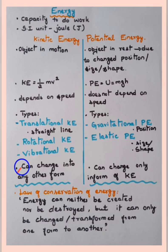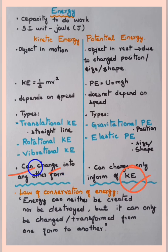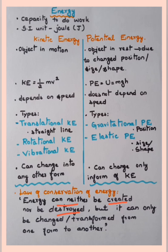Kinetic energy can be changed into any other form. Potential energy can only be changed into kinetic energy; it cannot be changed directly into any other form. Once converted to kinetic energy, it can then be changed into other forms. The important law here is the law of conservation of energy: energy can neither be created nor destroyed, but can only be changed or transformed from one form to another.